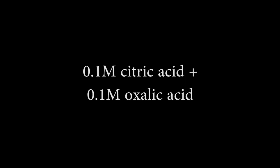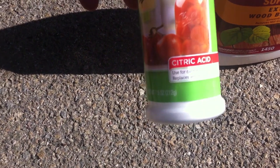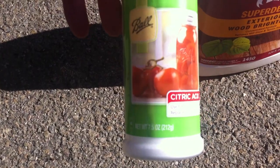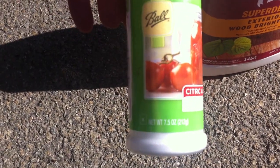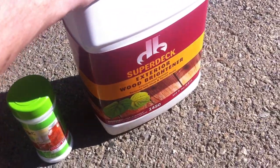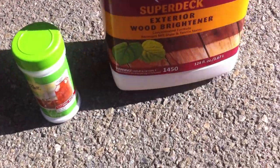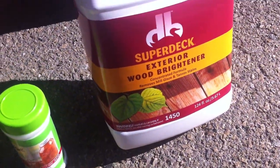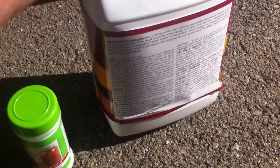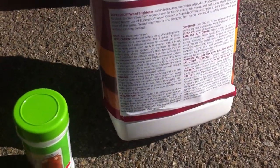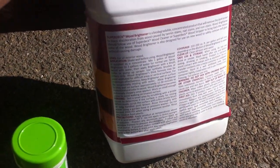The acid solution contains citric acid and oxalic acid, each with a molar concentration of 0.1. You can get citric acid at Walmart near the canning supplies. Oxalic acid can be found in wood bleach, but some wood bleaches use sodium hydroxide instead, so be careful.